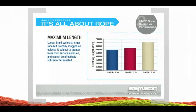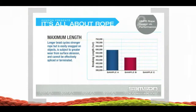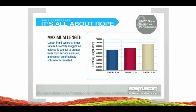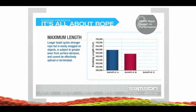This chart shows the differences in braking lengths for the three ropes. Longer braid cycles result in a stronger rope — increasing the angle of the braid makes them more efficient. The drawbacks to a longer cycle length are that the rope is easily snagged on objects, is subject to greater wear from surface abrasion, and cannot be as effectively spliced or terminated.